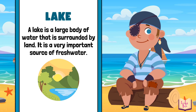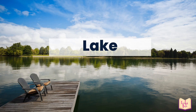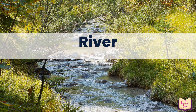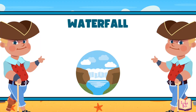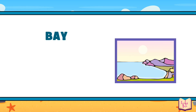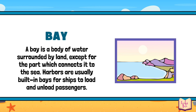A lake is a large body of water that is surrounded by land and is a very important source of fresh water. A river is a stream of water that flows through a channel on the ground. A waterfall is a body of water that originates from a high place. A bay is a body of water surrounded by land except for the part which connects it to the sea. Harbors are usually built in bays for ships to load and unload passengers.